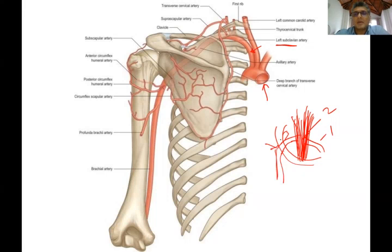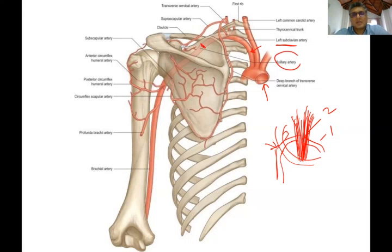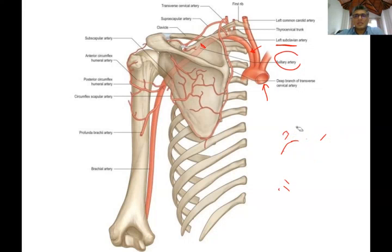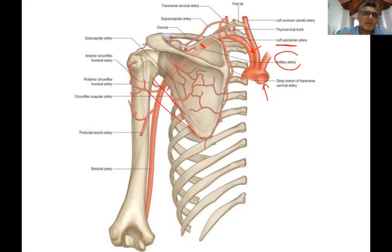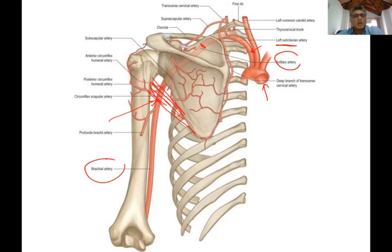When the subclavian artery passes distal to the outer border of the first rib, it is called the axillary artery. In this posterior view the first rib isn't very clear, but somewhere in that area it crosses the first rib. If you continue the axillary artery from the outer border of the first rib and draw teres major, at the lower border of teres major the axillary artery becomes the brachial artery.